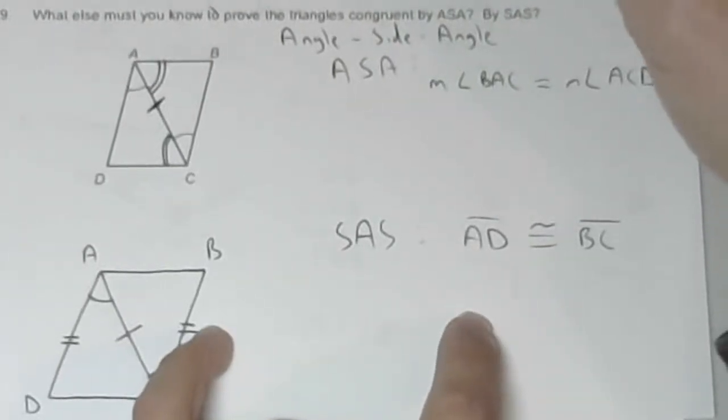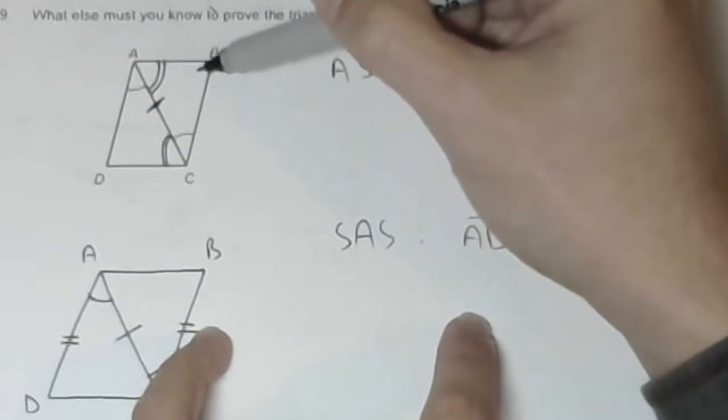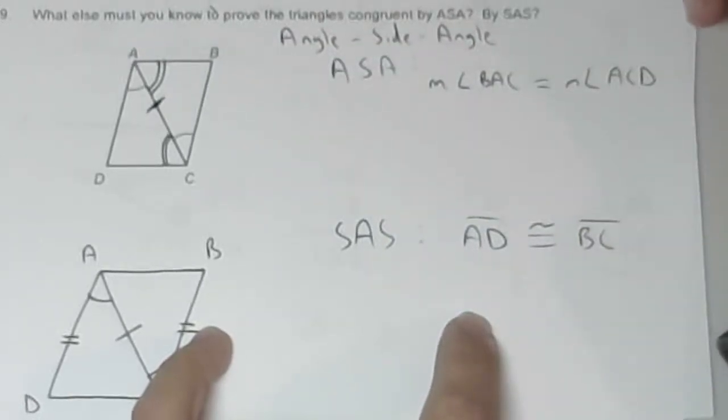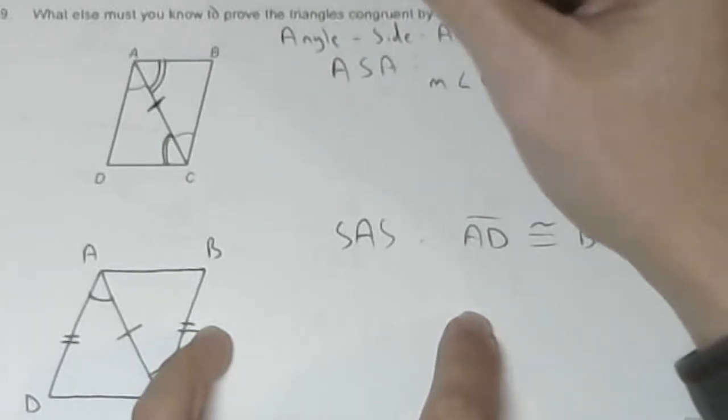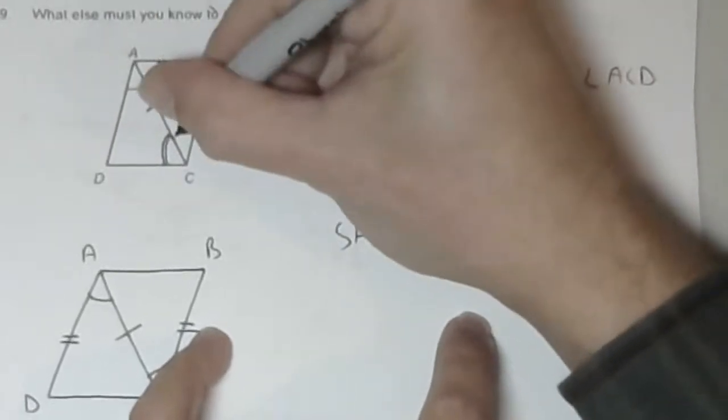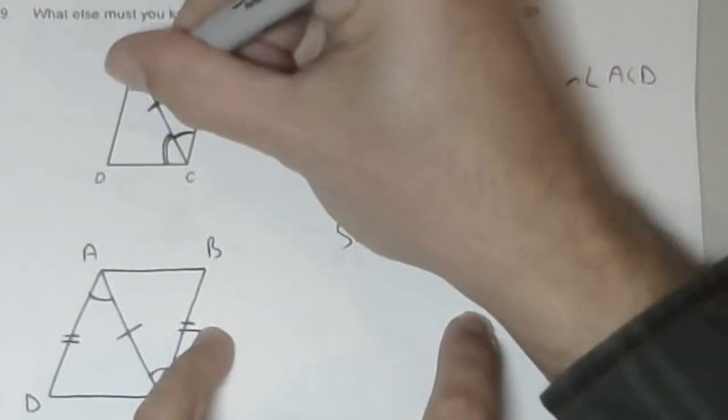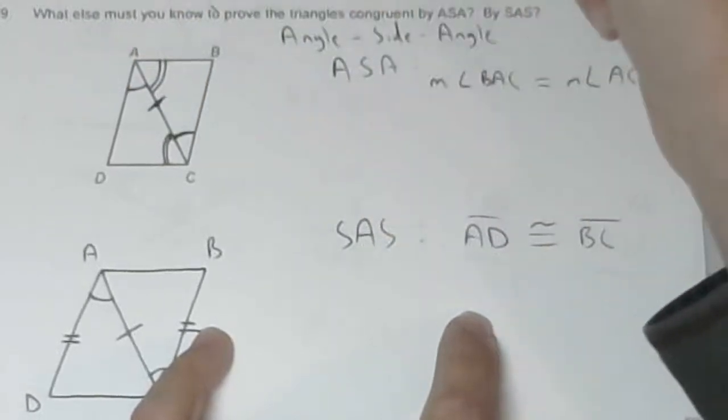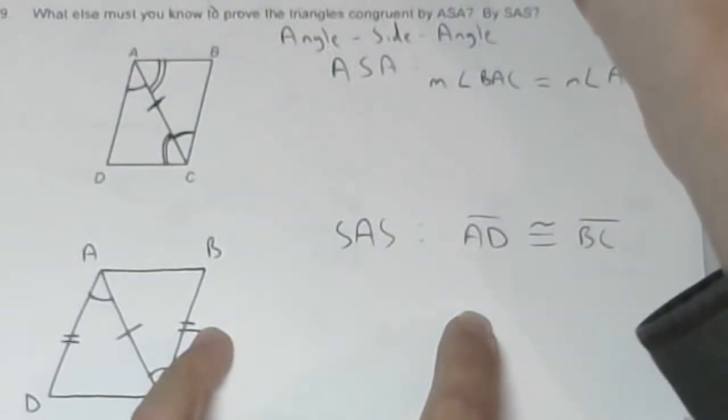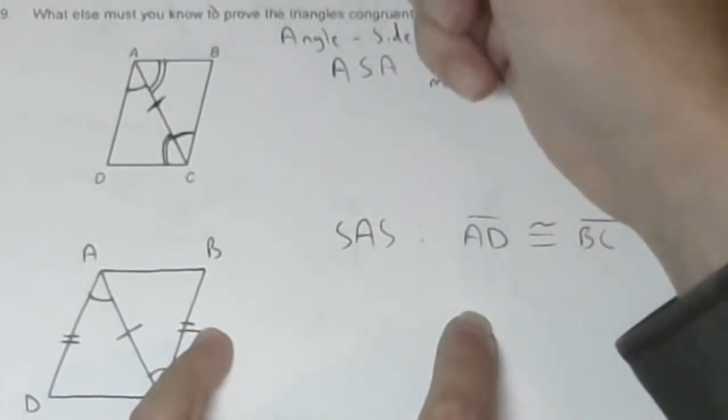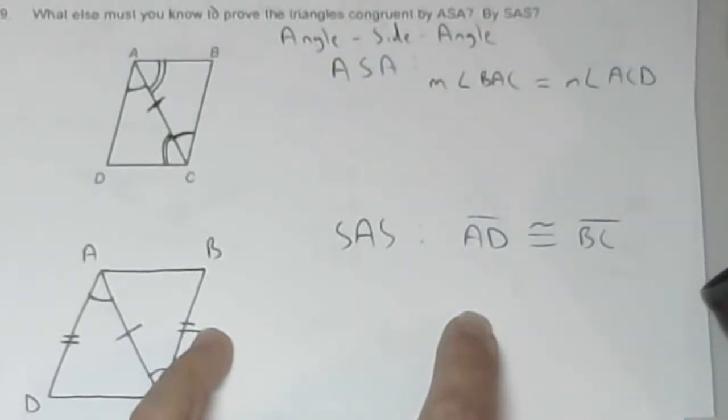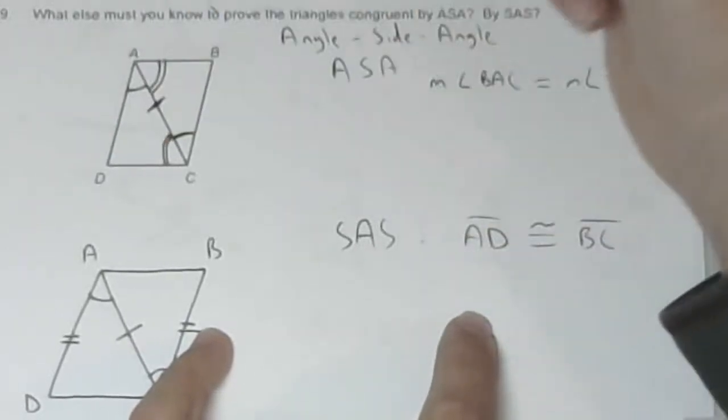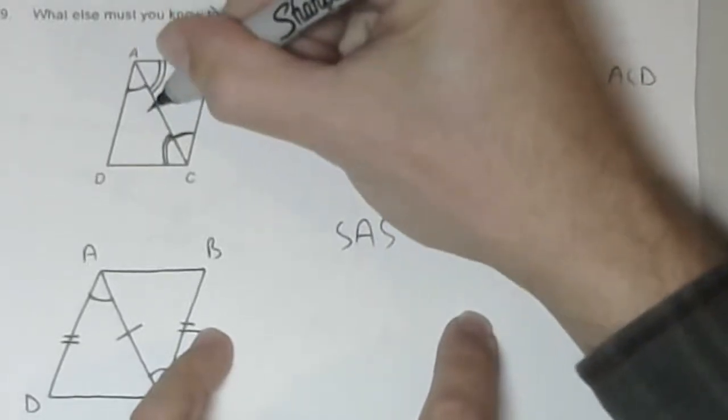To prove the triangles by ASA, what's marked? What was marked on the question is this angle, which is ACB, and this angle, which is DAC. We'll mark AC equal to itself. That doesn't count for the question most likely. But if we have angle BAC congruent to angle ACD, then we have angle, side, angle.